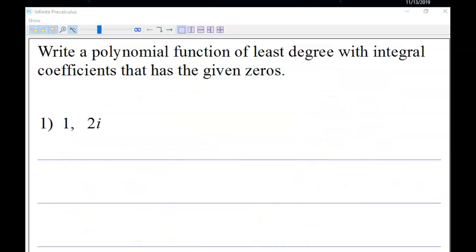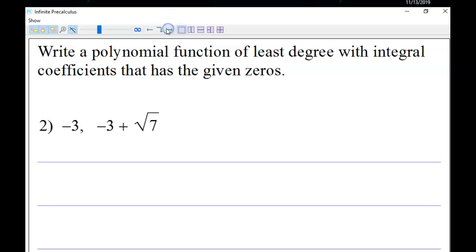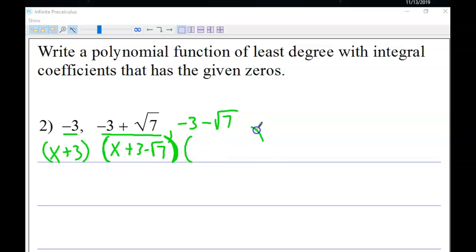Let's take a look at another example here. Now, I'm doing more than one example because every example that I'm throwing at you here has a little bit of a twist to it. So here's this one: -3, -3 + √7. Which one of these can I apply the conjugate theorem to? Well, it's the one that has the square root in it. That's the irrational one. So the conjugate that would go with that would be -3 - √7. So that's step 1. Use the conjugate theorem to find the conjugate pair. Next, turn your roots into factors. So I'm going to put (x + 3), then (x + 3 - √7), and (x + 3 + √7).